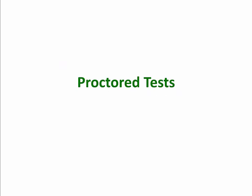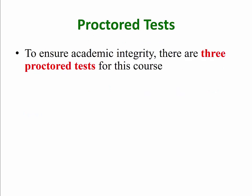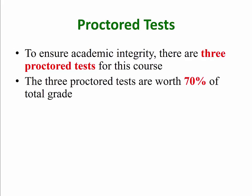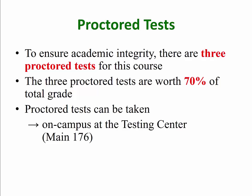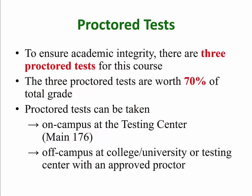To ensure academic integrity, there are three proctor tests for this course. These tests are worth 70% of the final grade. These tests can be taken on campus at the testing center, which is Maine 176, or off campus at a different college or university, or at a testing center with an approved proctor.